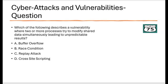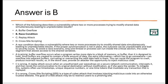Now a question on cyber attacks and vulnerabilities: Which of the following describes a vulnerability where two or more processes try to modify shared data simultaneously, leading to unpredictable results? Is it a buffer overflow, a race condition, a replay attack, or cross-site scripting? The answer is B — a race condition — because it describes a vulnerability where two or more processes race to modify shared data simultaneously, leading to unpredictable results if proper synchronization is not in place.